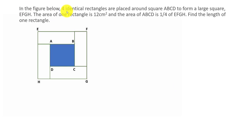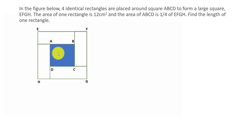In the figure below, four identical rectangles are placed around a square ABCD to form a larger square EFGH. You have a square ABCD and there are four rectangles — one, two, three and four — placed around this square, and that forms a large square EFGH. The area of one rectangle is 12 cm² and the area of ABCD is one fourth the area of EFGH. Find the length of one rectangle.